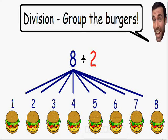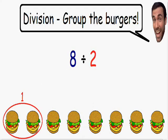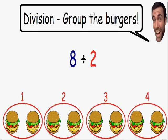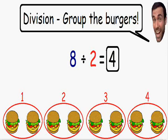And these burgers are being divided by 2, so we need to make groups of 2. Well here we have one group of 2, here we have our second group, here we have the third group, and here we have the fourth group. We have 4 groups of 2. So 8 divided by 2 is equal to 4.